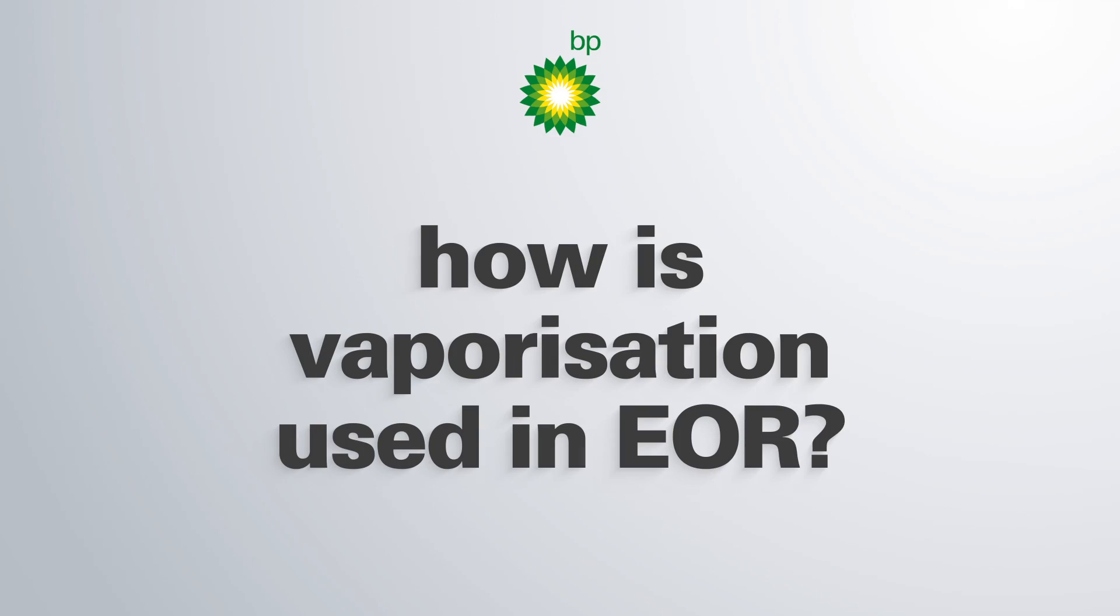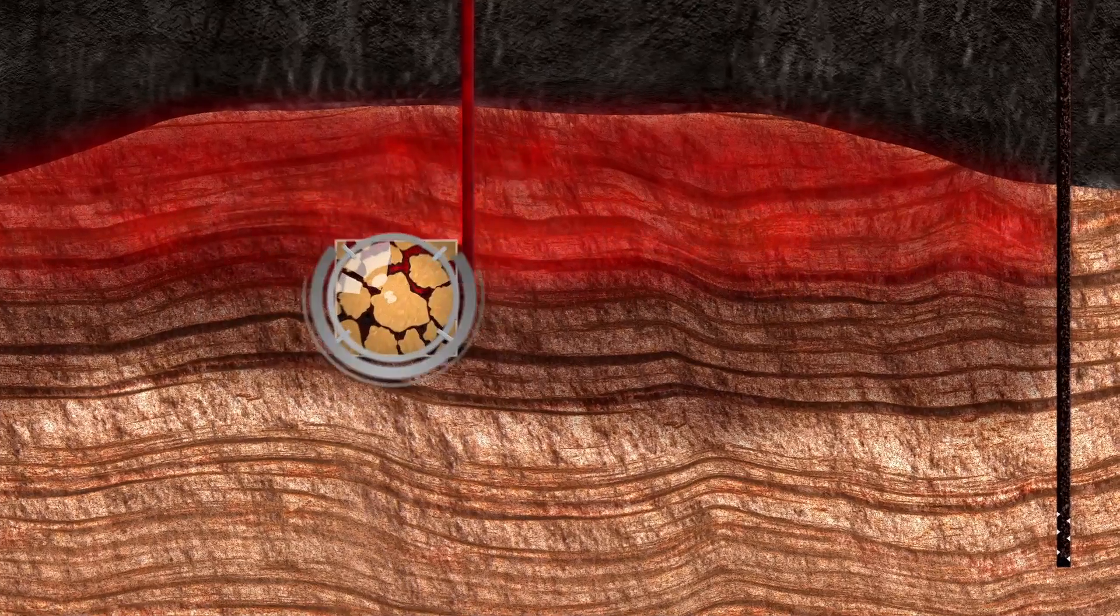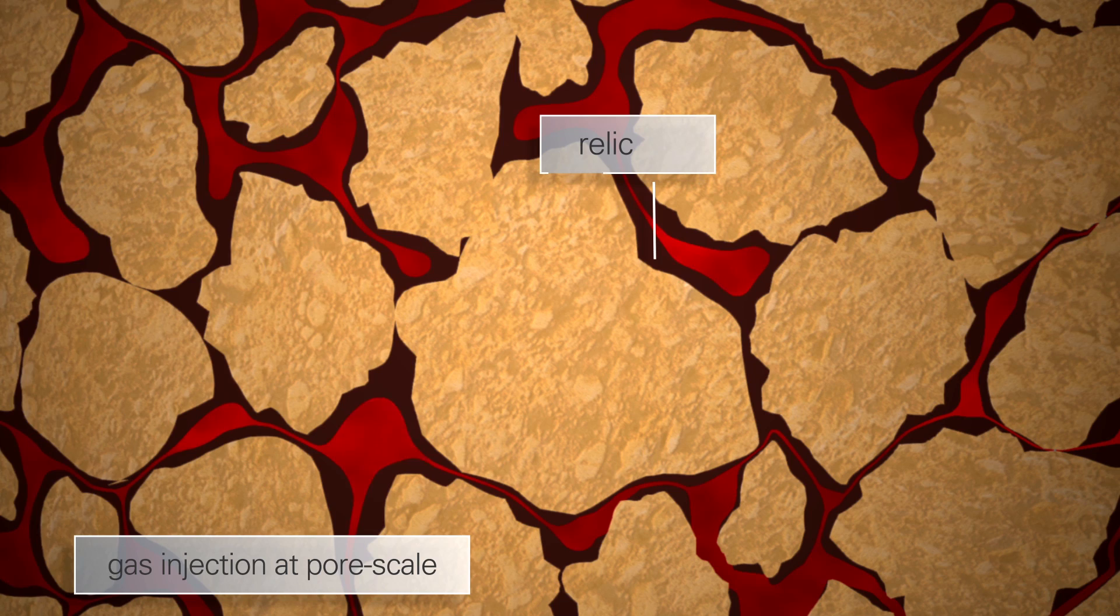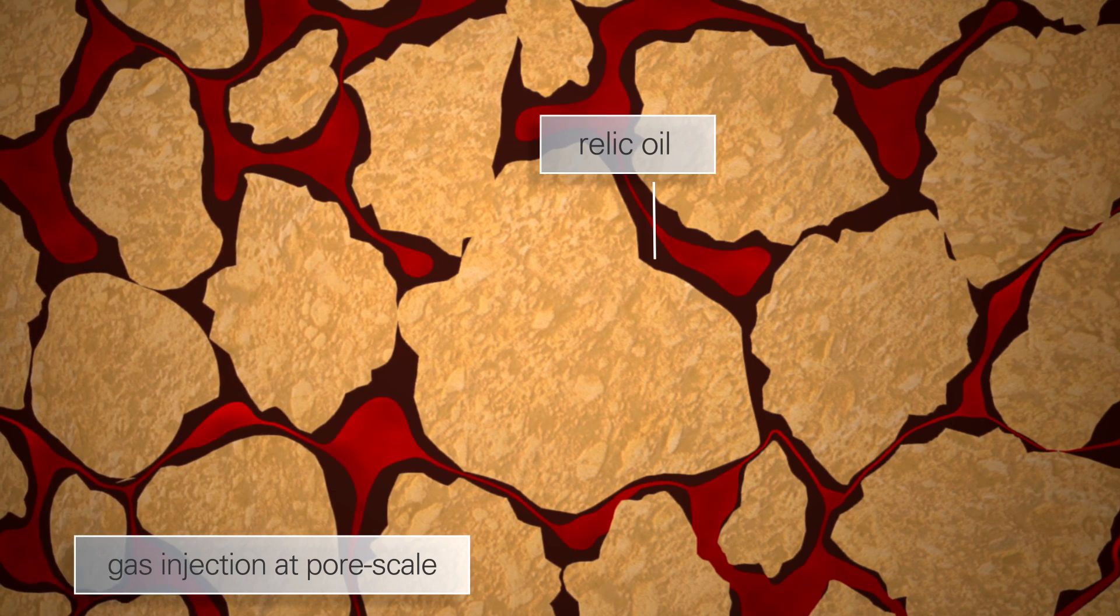How is vaporization used in EOR? Vaporization is used to recover oil that after the presence of a gas flood has lost its flow continuity and is left trapped on the surface of the reservoir rock, called relic oil.